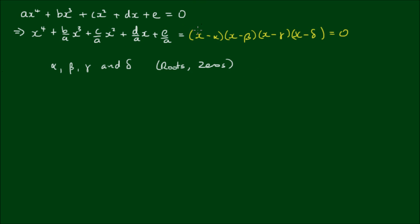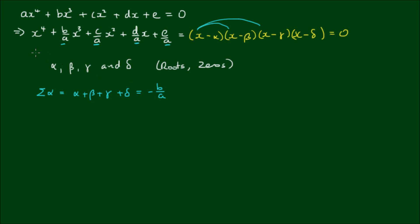If I then proceeded to expand all of these terms out, I would get the following relationships between these roots and the coefficients. The sum of all of the roots — alpha plus beta plus gamma plus delta — is equal to the negative of b/a, which is the negative of the x cubed coefficient.